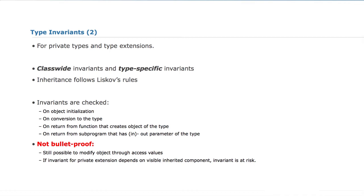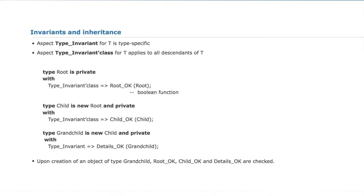You can combine these things — if you have a private type that has components that are themselves private, you create an object of this composite entity and the invariant of the whole thing must be respected, along with the invariants of the components. So there is quite a bit of machinery developed to ensure invariants are respected. For example, with a little hierarchy of root type, child, and grandchild — where the root has a class-wide type invariant, the child has a class-wide type invariant, and the grandchild has a type-specific invariant — whenever you create a grandchild, you will have to verify all three invariants to make sure the object is proper regardless of the view that you have of it.